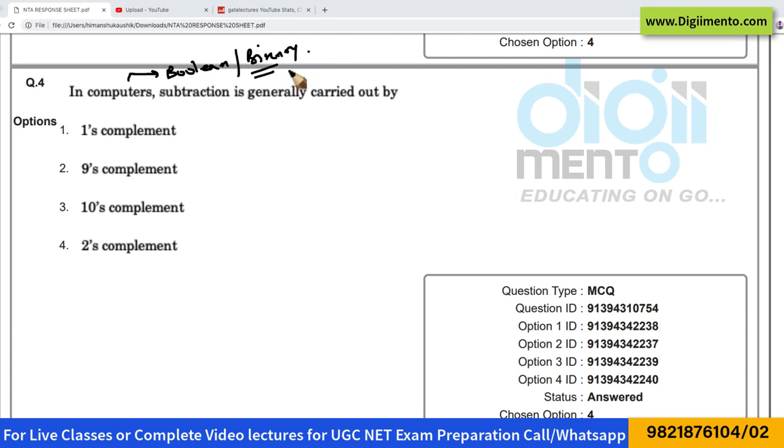Now in the binary numbers, to represent negative numbers, you can use sign bit representation, you can use 1's complement representation, and you can use 2's complement representation.